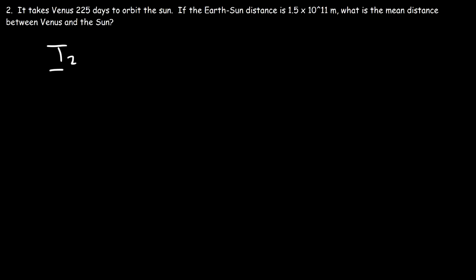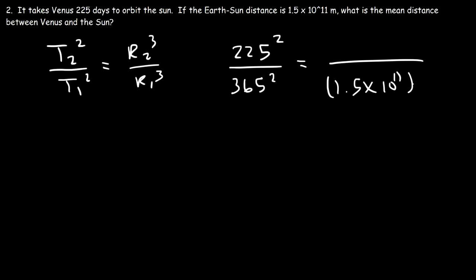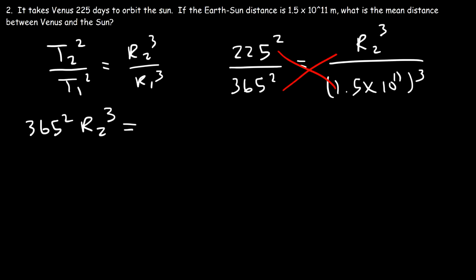Using the same equation (T₂/T₁)² = (R₂/R₁)³, with T₁ = 365 days for Earth and T₂ = 225 days for Venus, and R₁ = 1.5×10¹¹ m. Cross-multiplying: 365² × R₂³ = 225² × (1.5×10¹¹)³. Dividing both sides by 365² isolates R₂³.